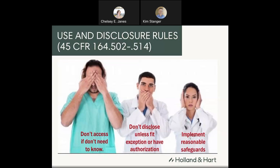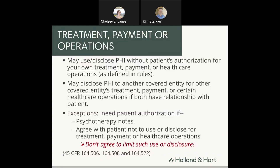Let's talk about the use and disclosure rules. HIPAA generally says you cannot use, access, or disclose protected health information unless you've got the patient's written authorization or you fit within a HIPAA exception. The general rule: if you don't need to access it, you shouldn't be looking at that information. You shouldn't disclose it outside your organization unless you fit within a HIPAA exception or have the patient's authorization, and you've got to implement reasonable safeguards. The first exception says you may use or disclose PHI without the patient's authorization so long as it is for your own treatment, payment, or healthcare operations.